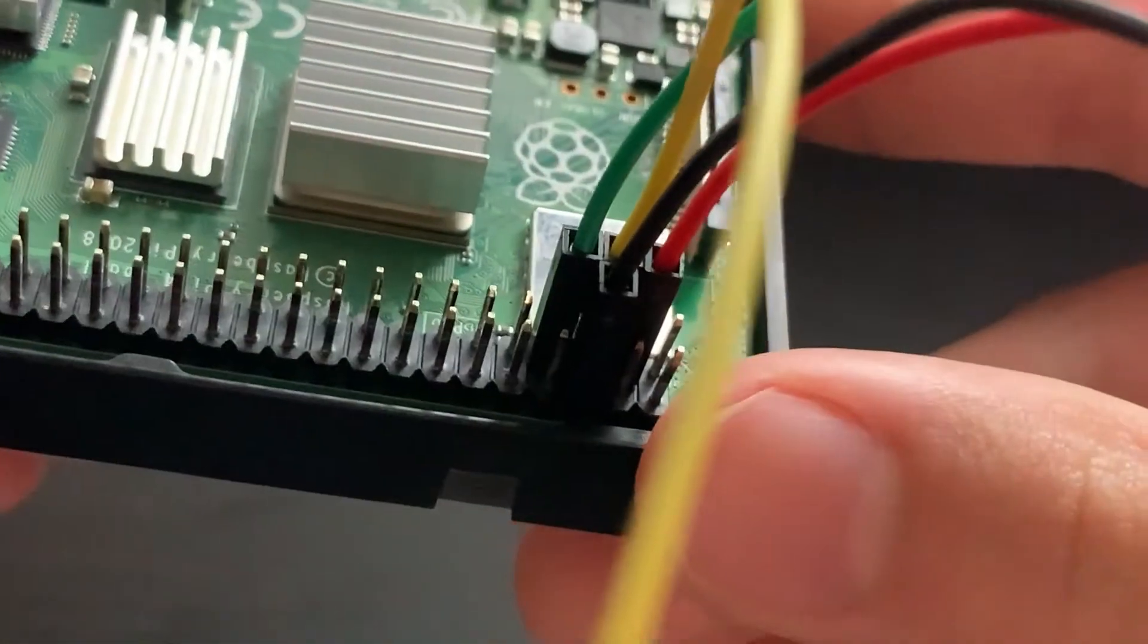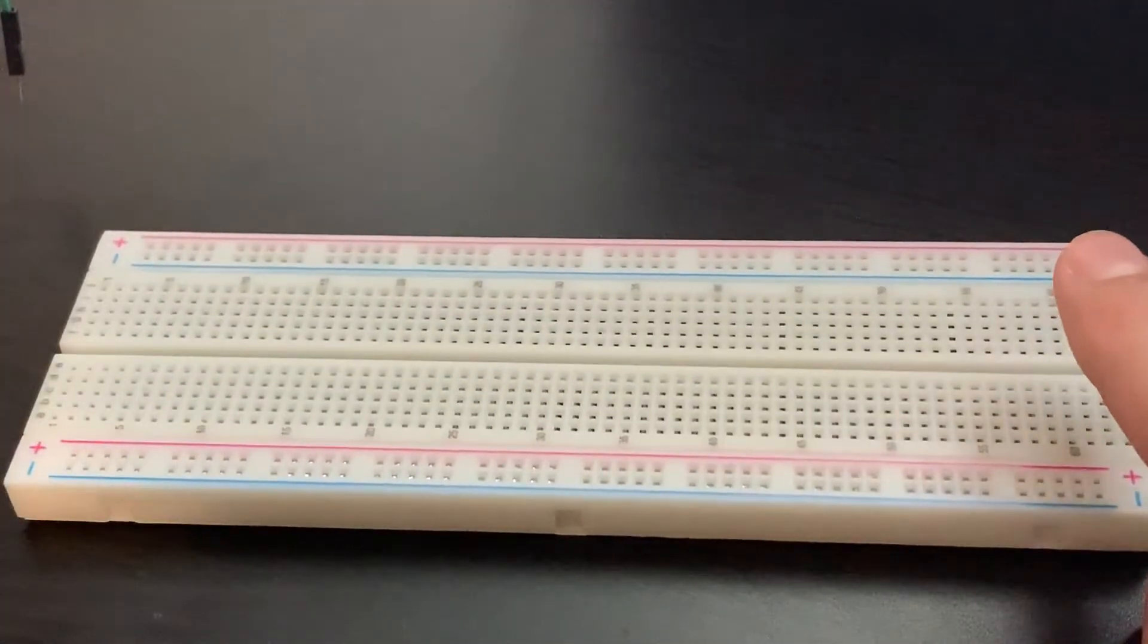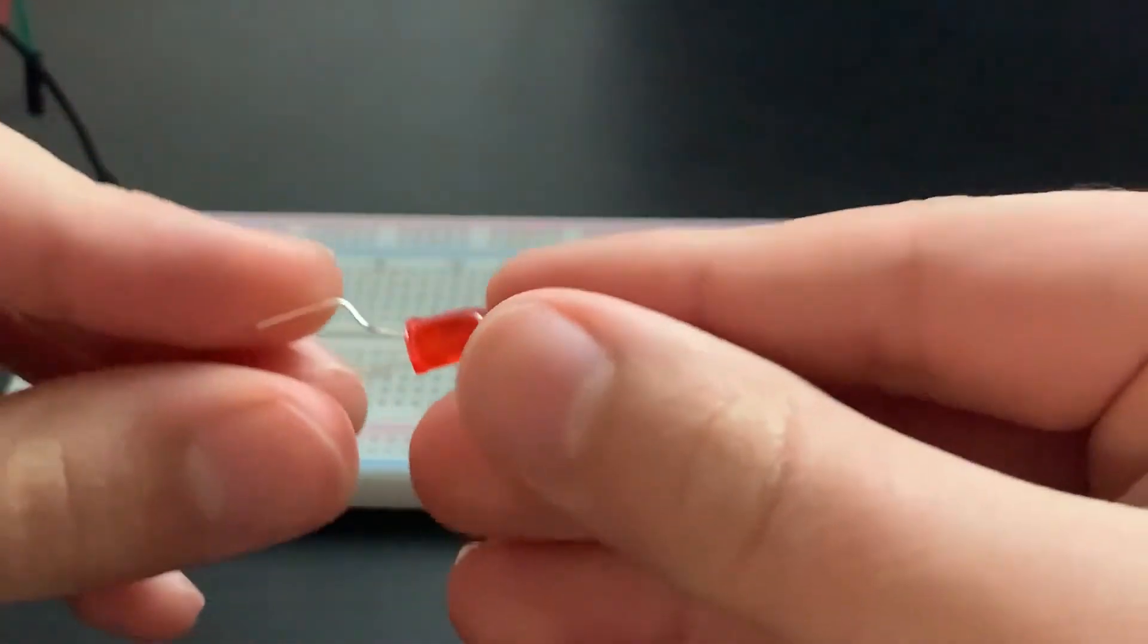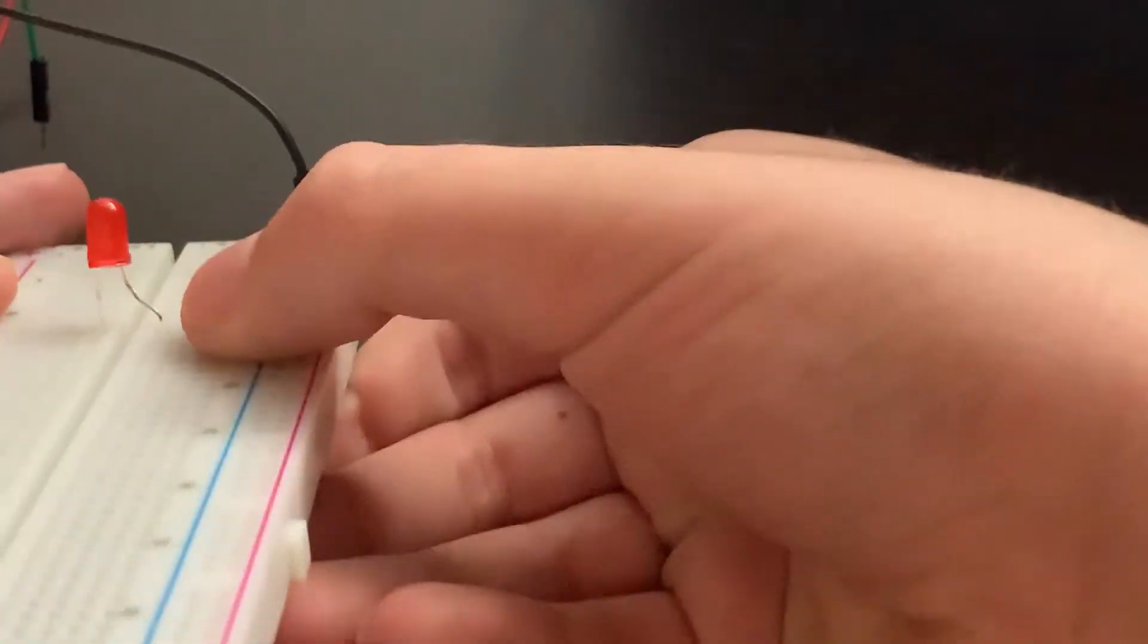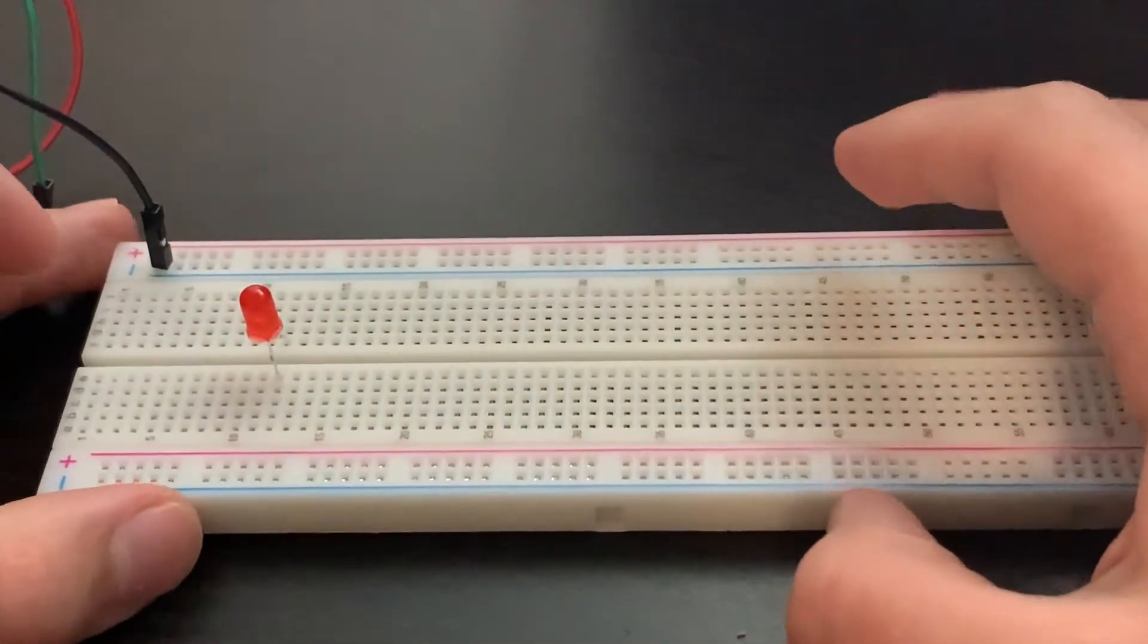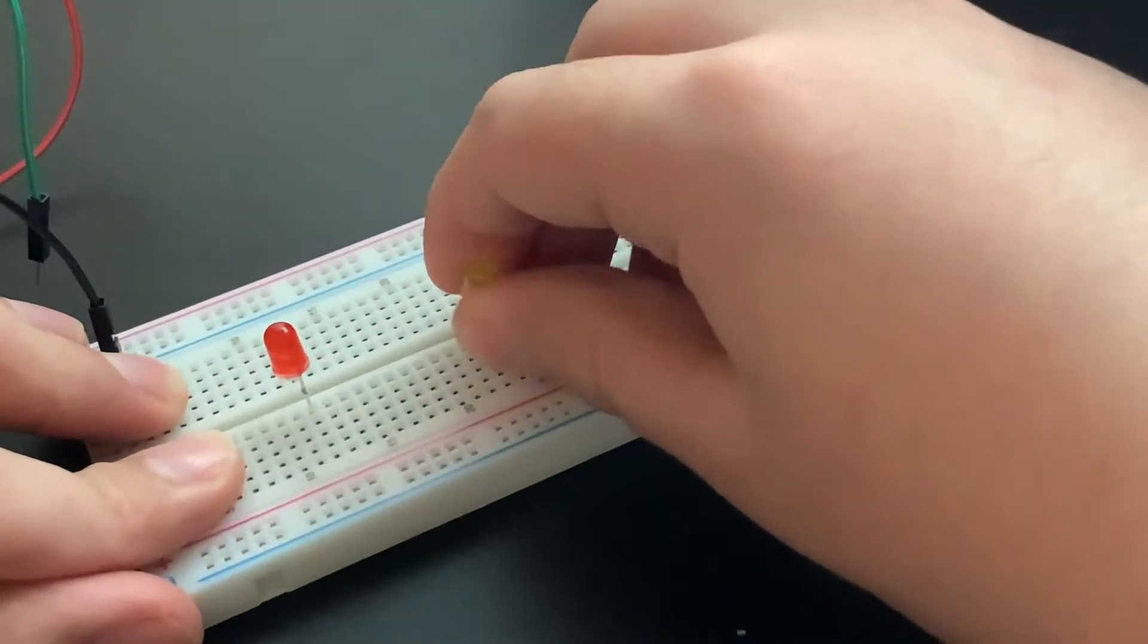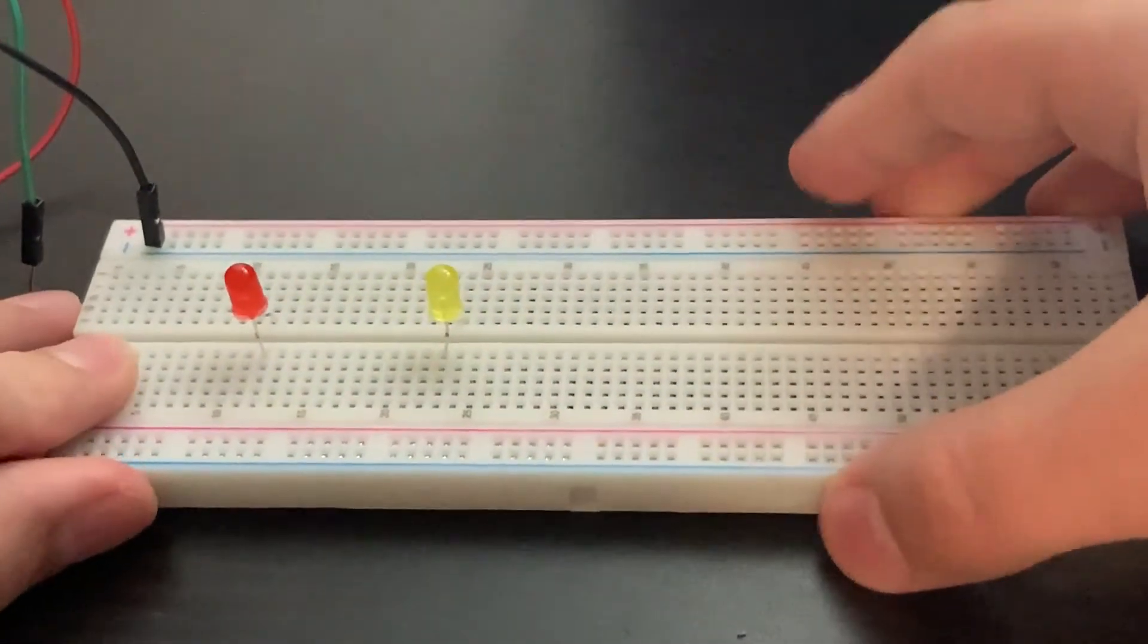So now we can work on our breadboard. The first thing we're gonna do is connect the ground pin to the ground rail just like that. Then we'll be connecting our LEDs. First I'm gonna connect the red - one leg goes on this side and one leg goes on this side. Next I'll do yellow, and lastly we'll be doing green.